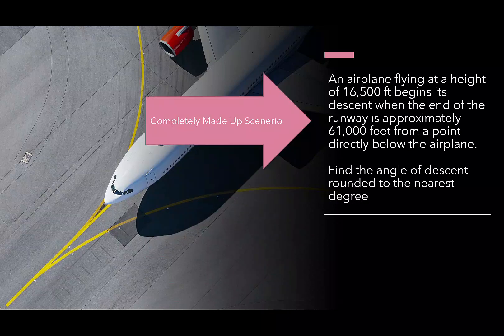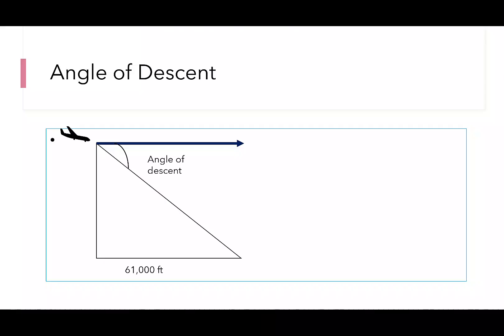These numbers are completely made up to give us a scenario to use for our calculation. So we want to plug in what we know. We know the horizontal distance on the ground is 61,000 feet. We know the elevation of the plane is 16,500 feet.